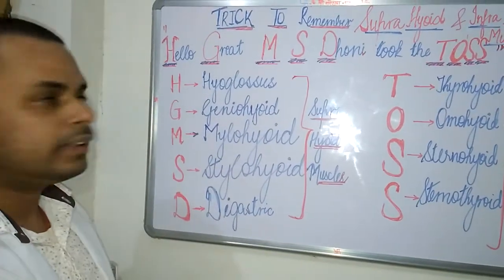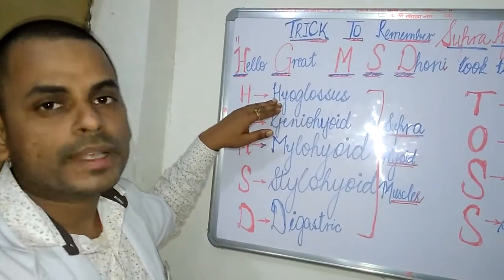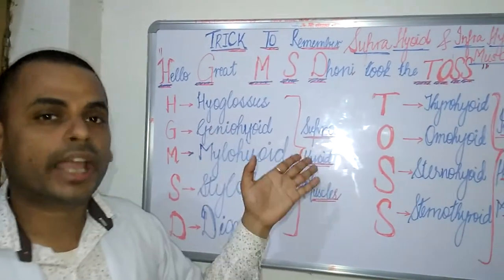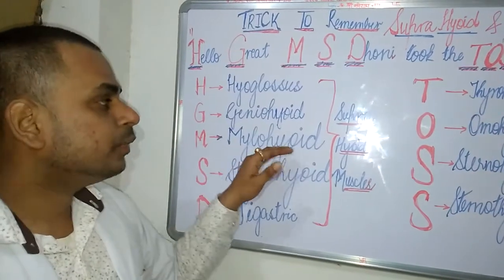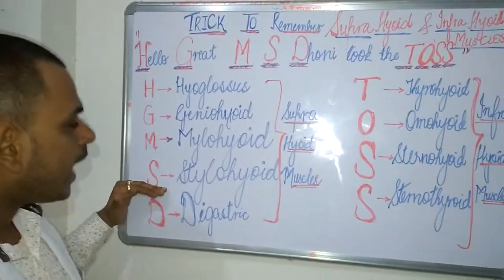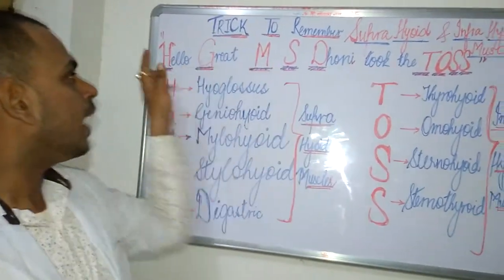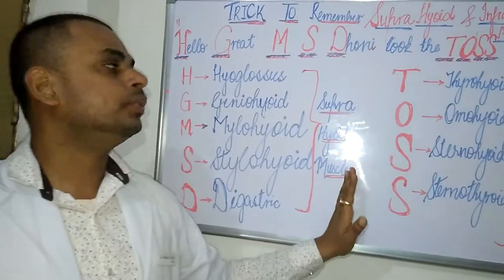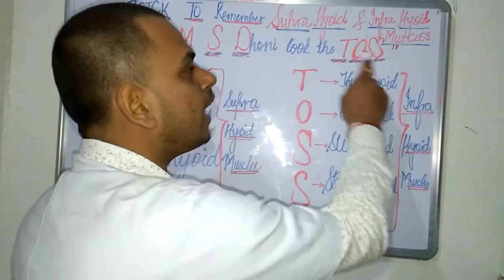Looking at the anatomy: the hyoglossus muscle runs from the hyoid bone to the tongue and lies above the hyoid bone. The geniohyoid runs from the genial tubercle to the hyoid bone. The mylohyoid forms the floor of the mouth to the hyoid bone. S is the stylohyoid, from the styloid process to the hyoid bone. And D is the digastric muscle. So H-G-M-S-D helps us remember the suprahyoid muscles.